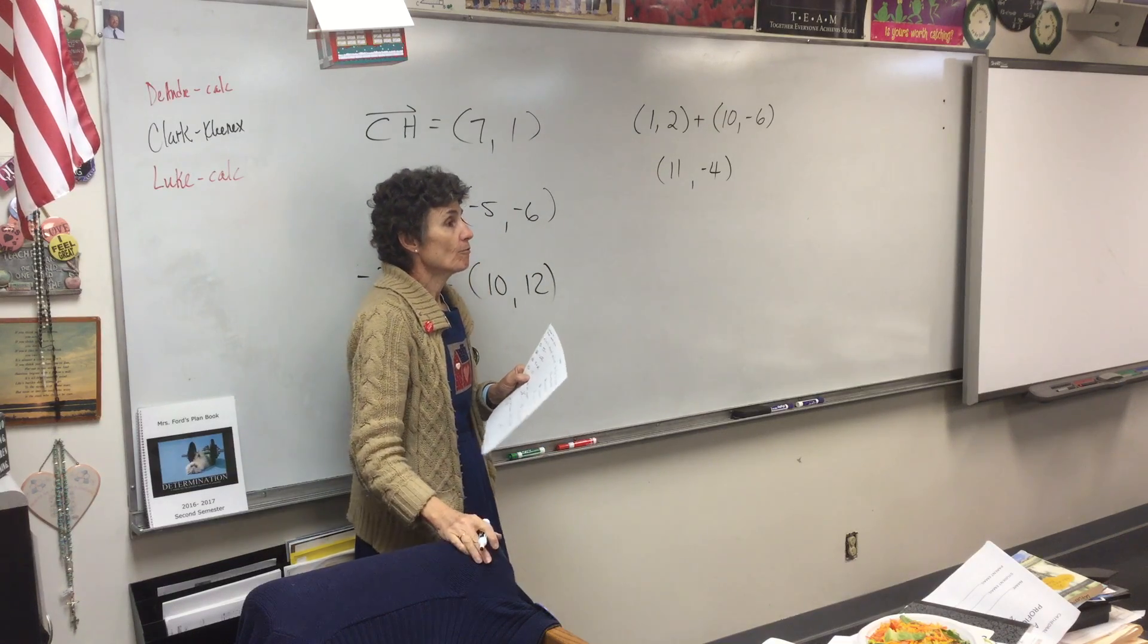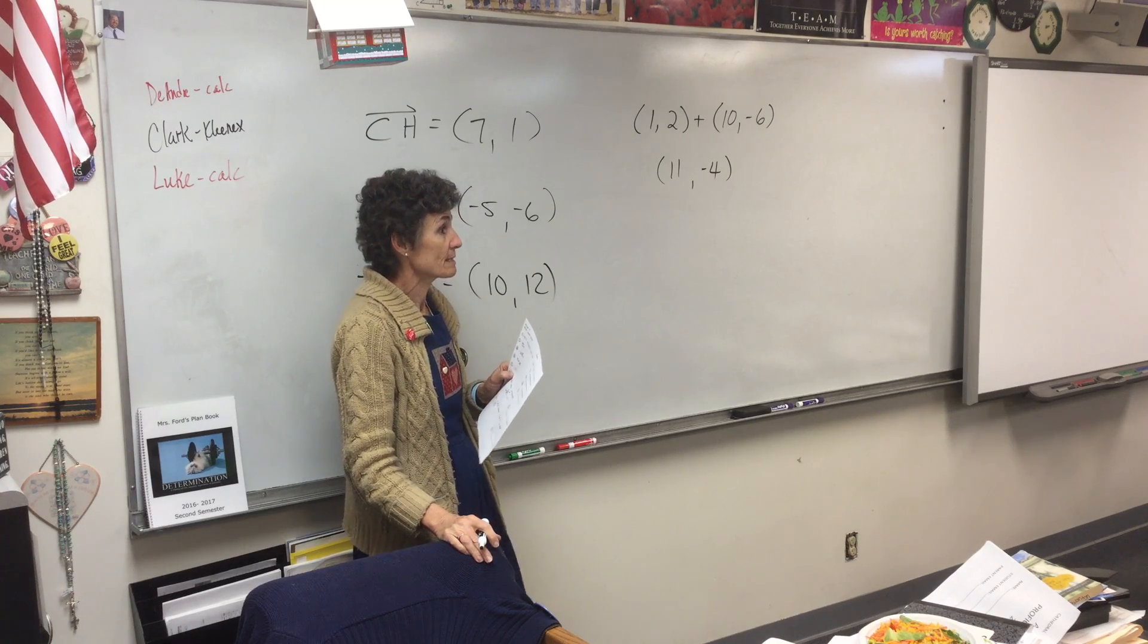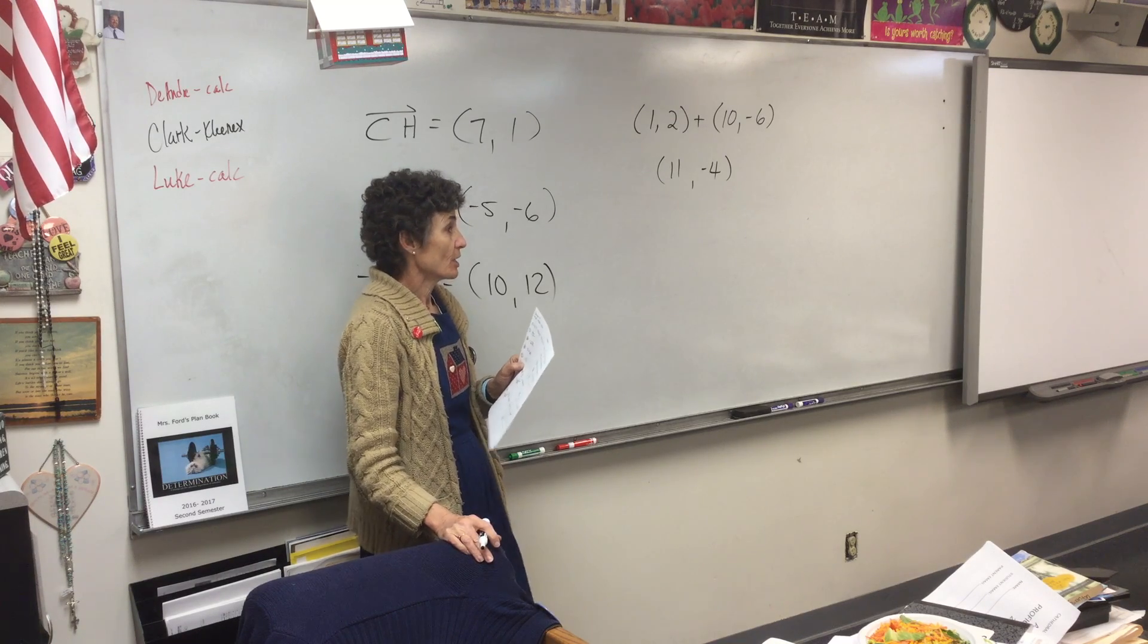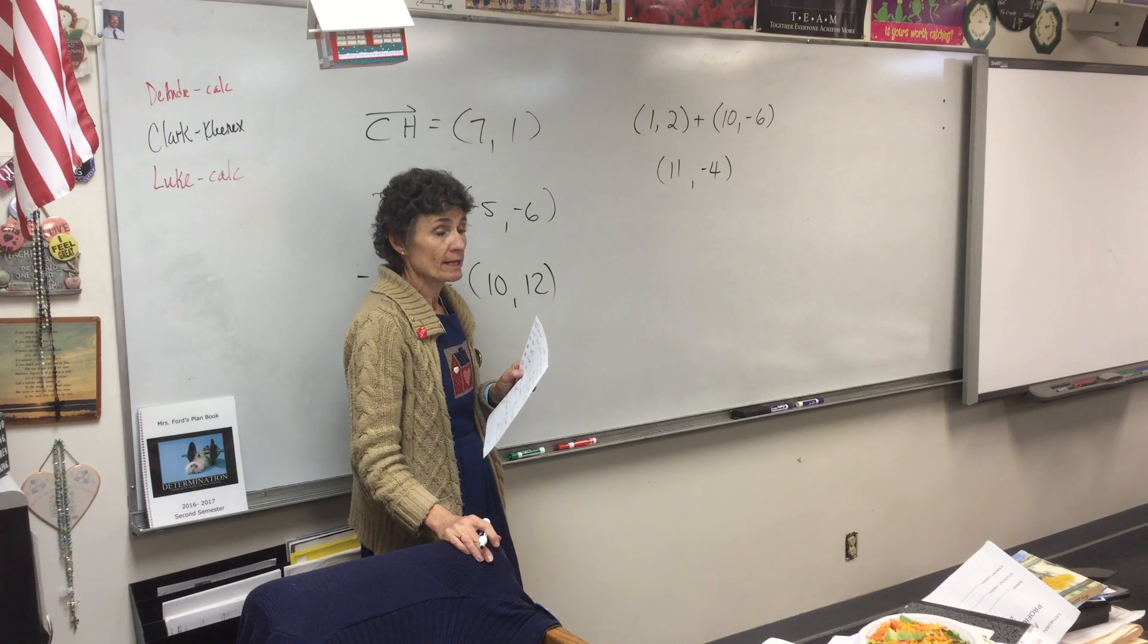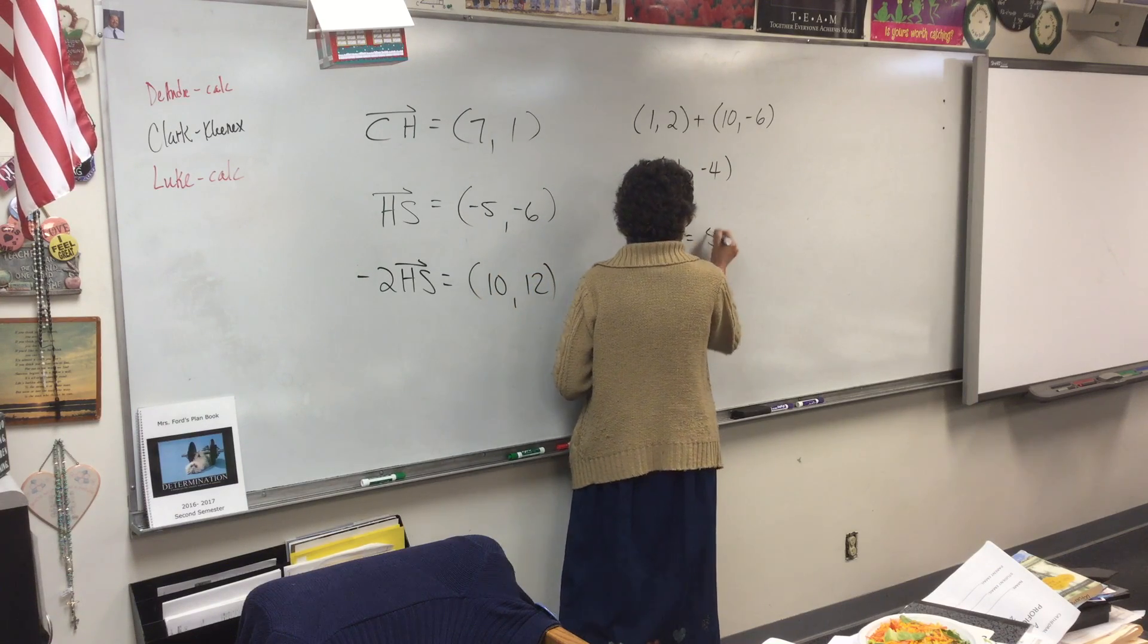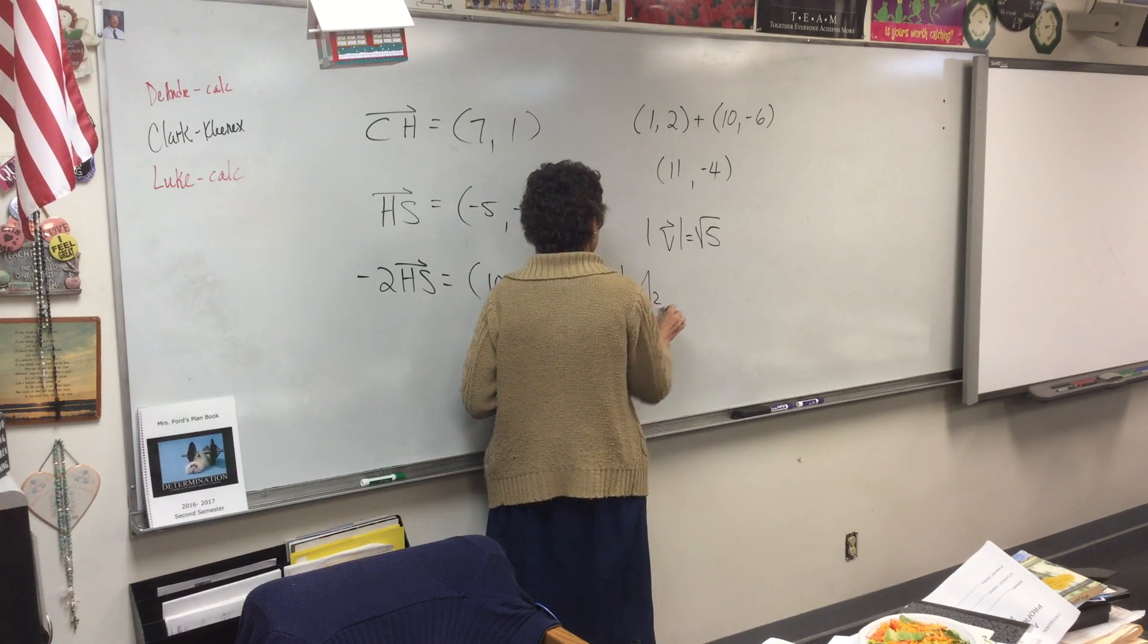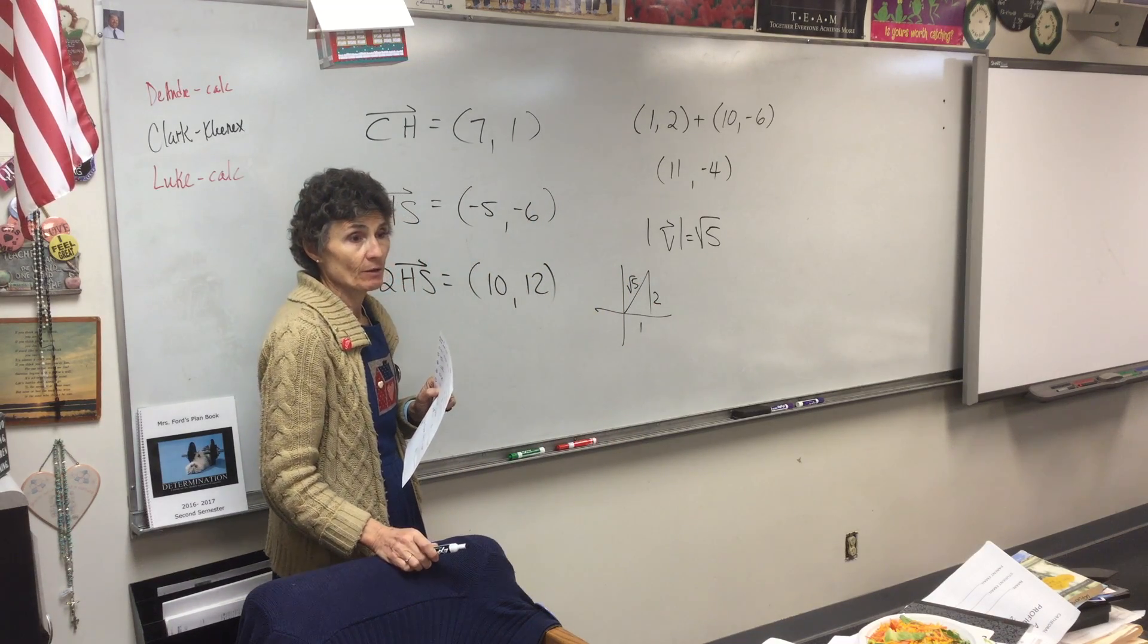What does number four mean? Absolute value. No, it looks like absolute value, but what does it mean? It means magnitude. It means the length. So we have a vector that goes over one and up two. How long is it? Root five. The square root of five. How do we find magnitude? X squared plus Y squared. Envision the vector that goes over one and up two. Do your Pythagorean theorem.